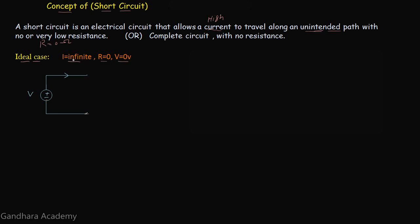To understand the ideal case, let's take an example in which we have a DC voltage source. If somehow there is an unintended path across the terminals of this voltage source, and the resistance of this unintended path is equal to zero ohms, then the voltage across this unintended path will be zero volts — there will be no potential difference across it. This unintended path is basically the short circuit.